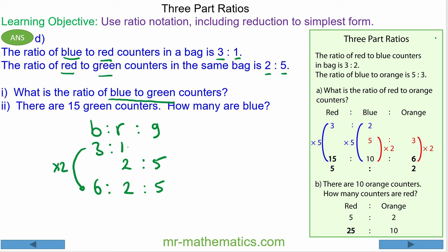From blue to green we have 6 to 5. There are 15 green counters, so we can use an equivalent ratio: 5 times 3 makes 15 green, and 6 times 3 is 18.